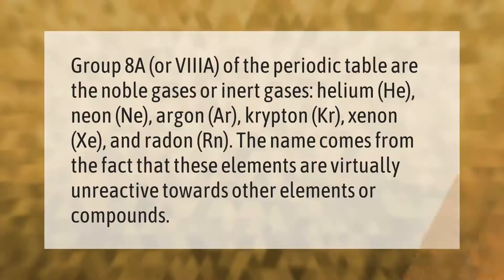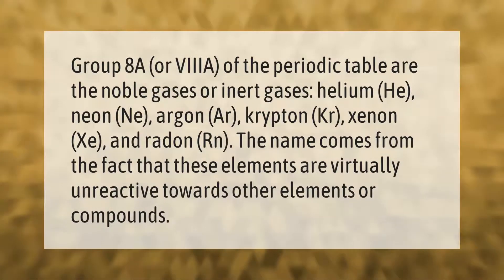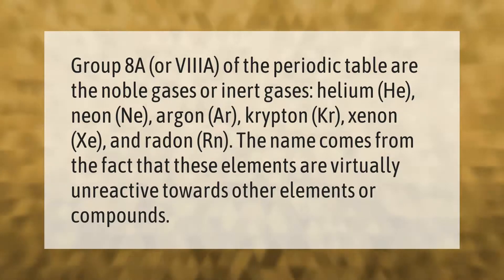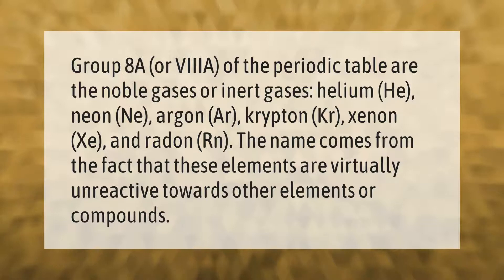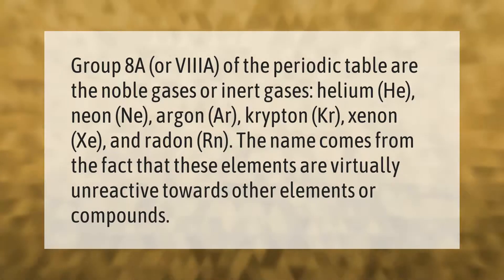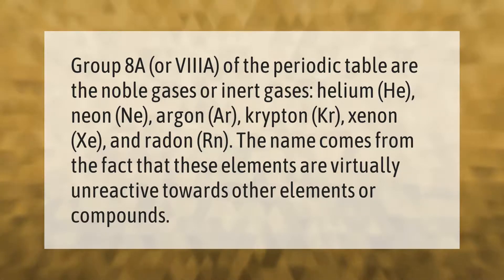Group 8A or VIII of the periodic table are the noble gases or inert gases: helium (He), neon (Ne), argon (Ar), krypton (Kr), xenon (Xe), and radon (Rn). The name comes from the fact that these elements are virtually unreactive towards other elements or compounds.